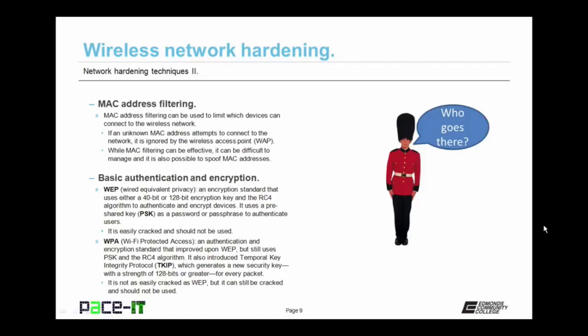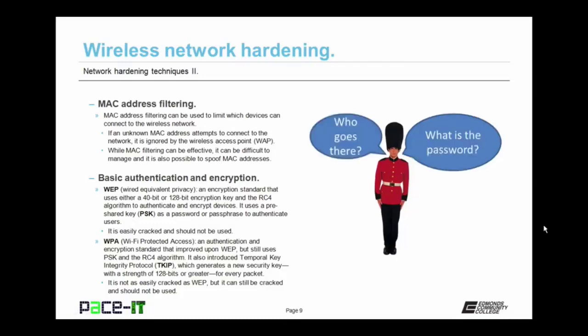This brings us to basic authentication and encryption for wireless networks. First up is WEP, or Wired Equivalent Privacy — an encryption standard that uses either a 40-bit or 128-bit encryption key in the RC4 algorithm to authenticate devices and encrypt transmissions. It uses a pre-shared key as a password or passphrase to authenticate users. WEP is easily cracked and should not be used — as a matter of fact, WEP can be cracked in minutes.